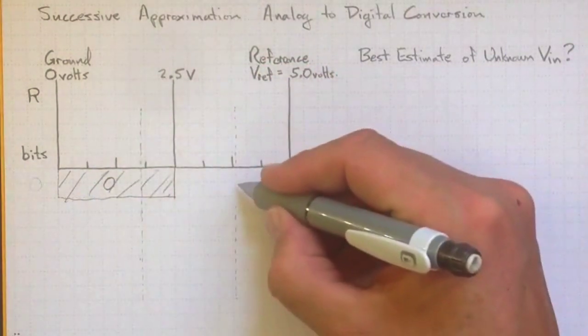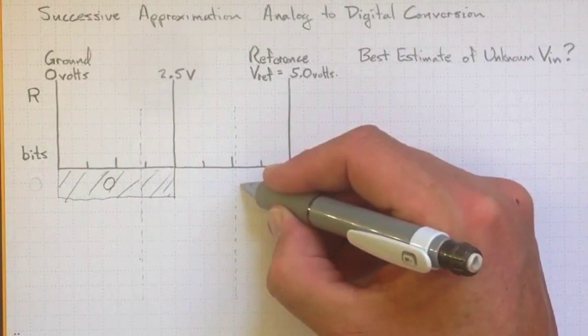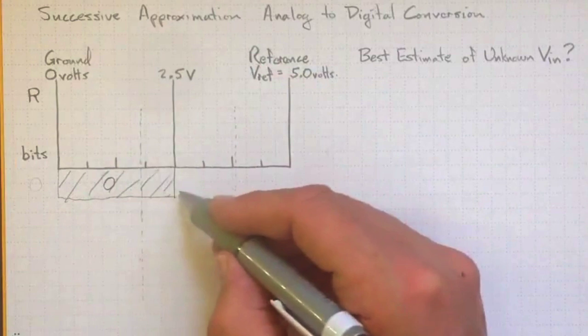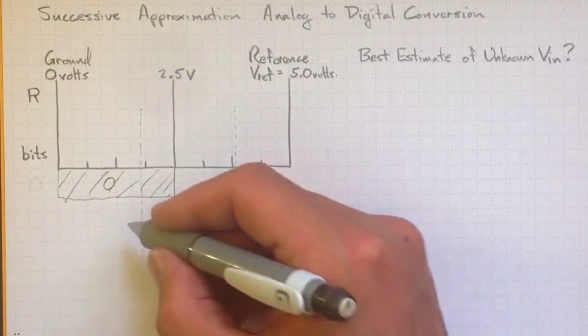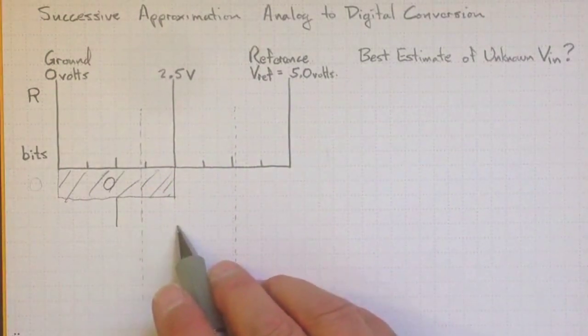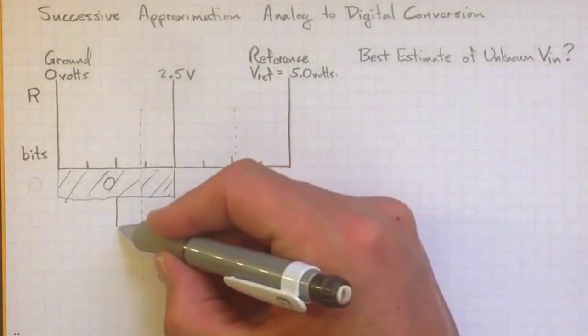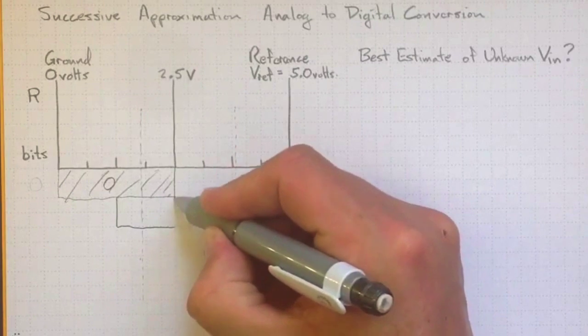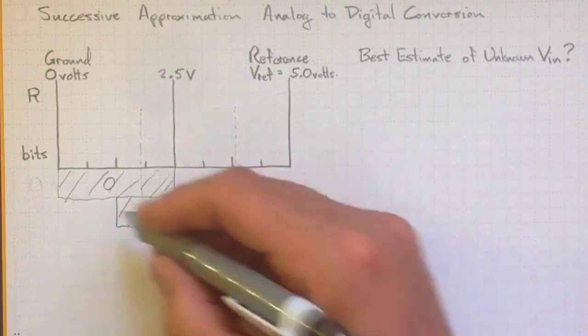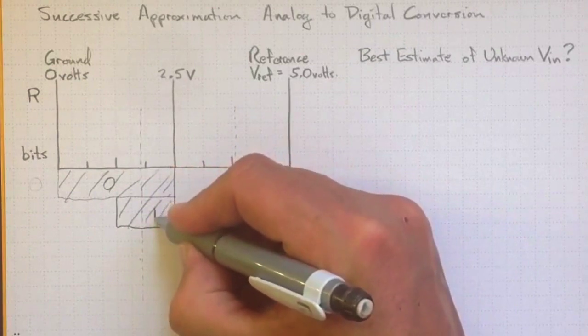Let's successively approximate. Let's split this region in half again and test it against a voltage that's halfway along. And it's greater than that voltage. So we know now, because it's greater, it fits somewhere into this region here. And that was greater, so we'll call that a one.